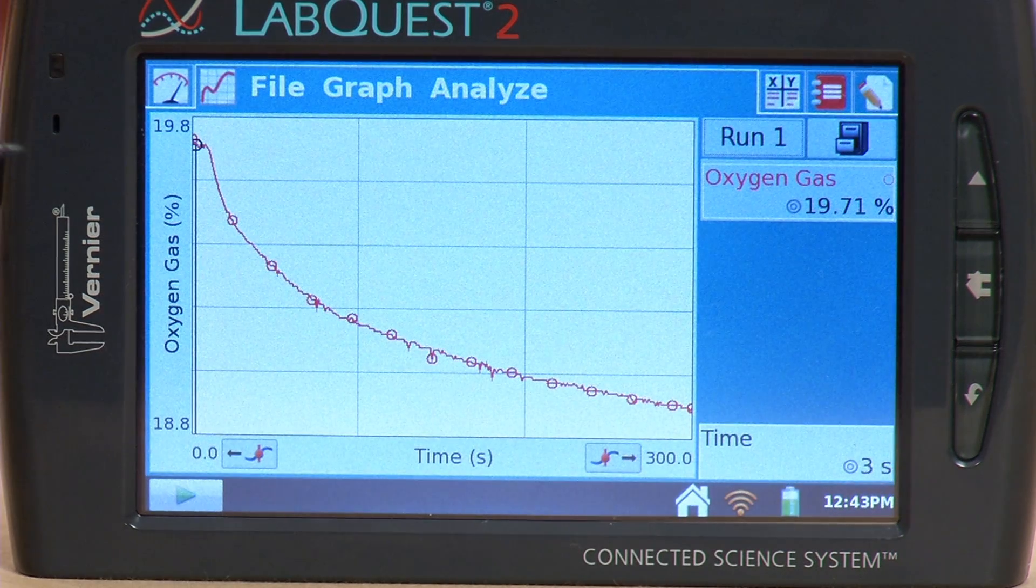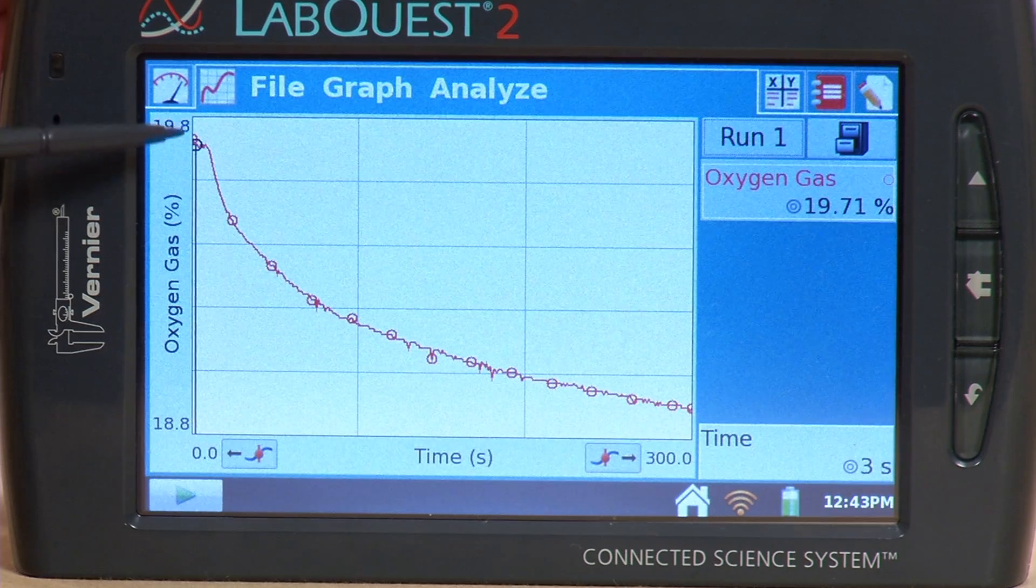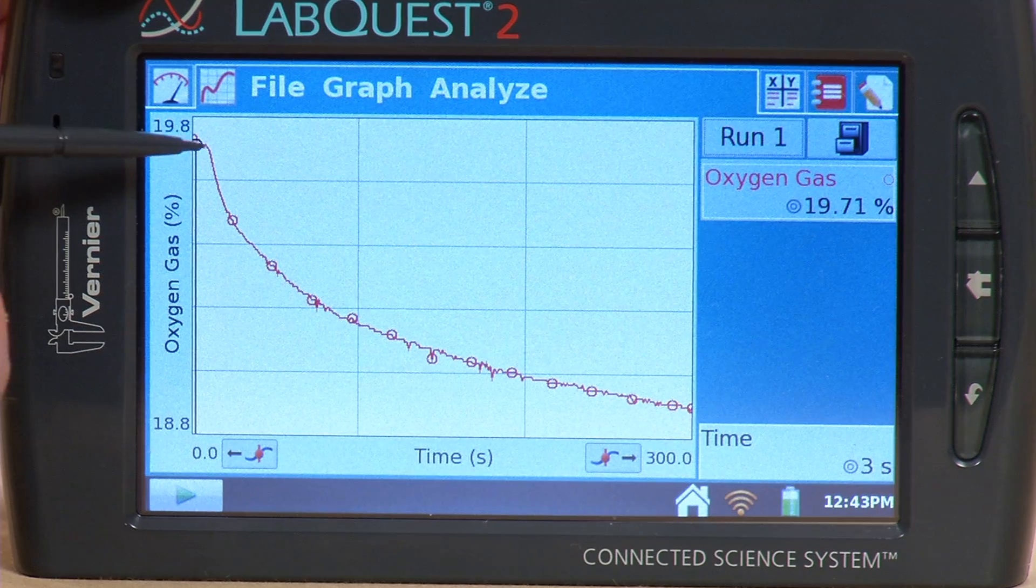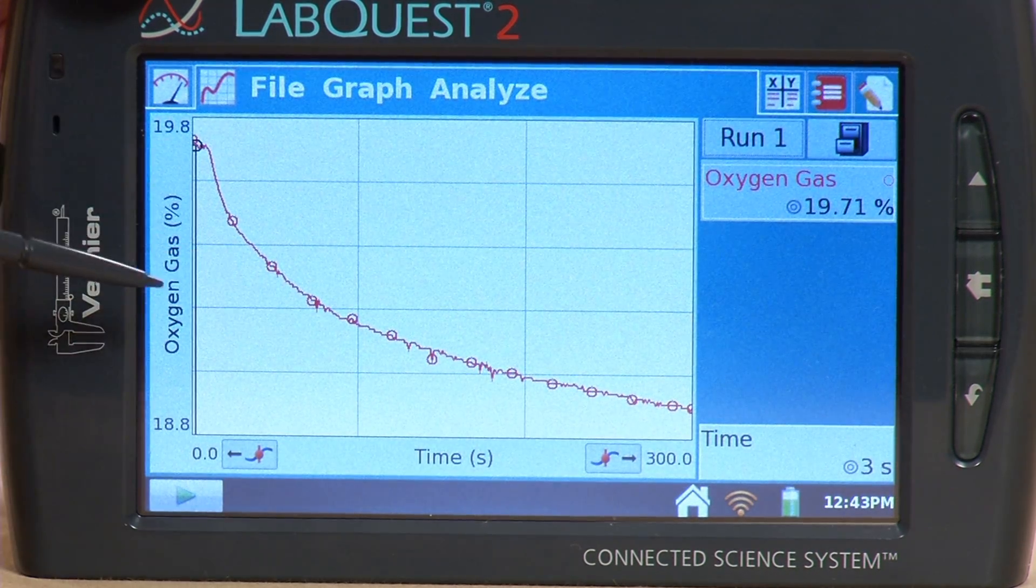we see that this first part, it dropped fairly rapidly because I just put the sensor into the bottle, and the peas had actually already been in there just a little bit. And so we saw this drop there.